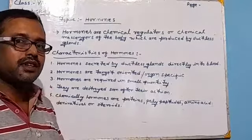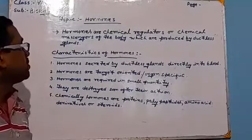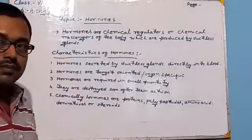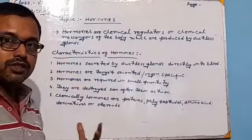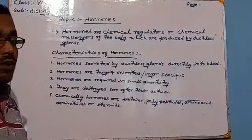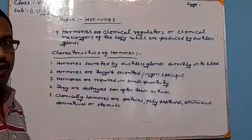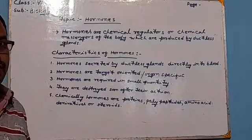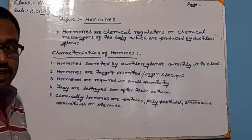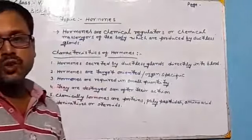Good morning students. In this video we will study about the topic of hormones from the chapter on the endocrine system of biology. Now, what are hormones? Hormones are chemical regulators or chemical messengers which are produced by ductless glands and help in control and coordination.